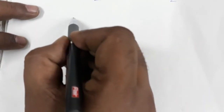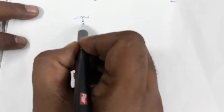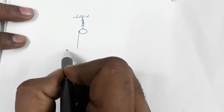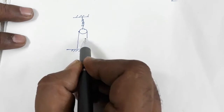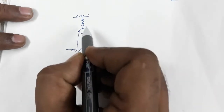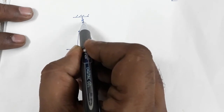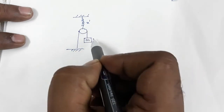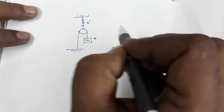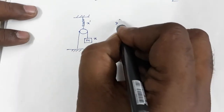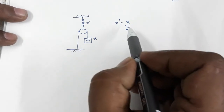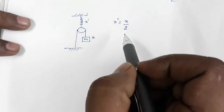Now suppose we have a system with a rigid support, an ideal spring connected to a pulley, with a string also fixed to a rigid support. This string passes over the pulley and the free end is attached to a block of mass m. For this system, let x' be the elongation in the spring when the block moves through a distance x. We need to find the relation between x' and x.